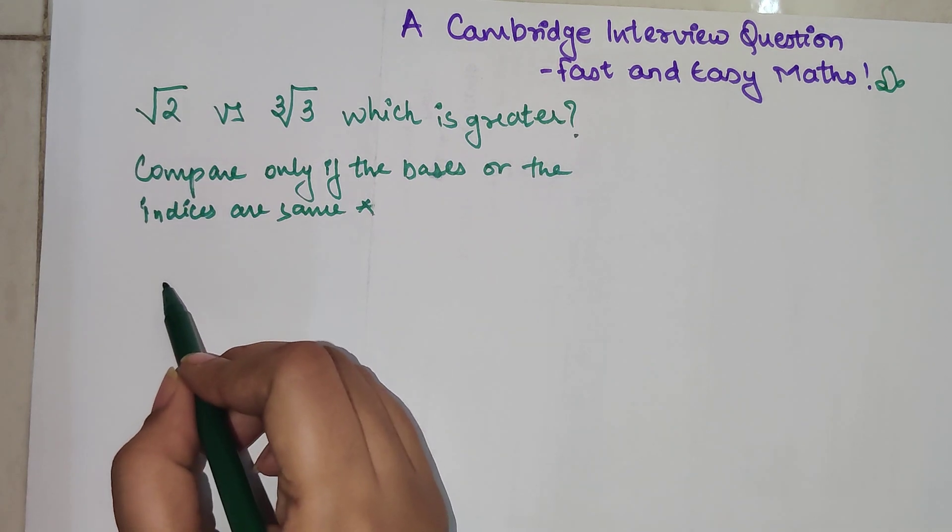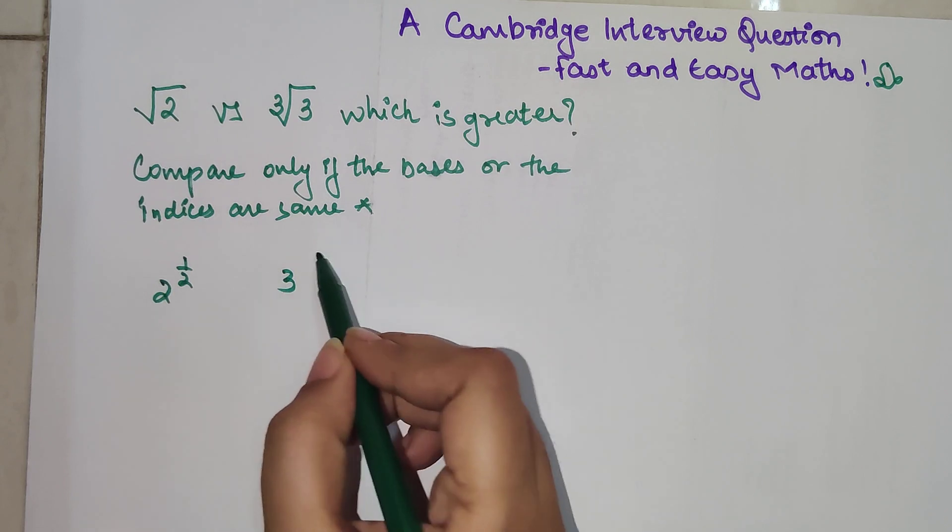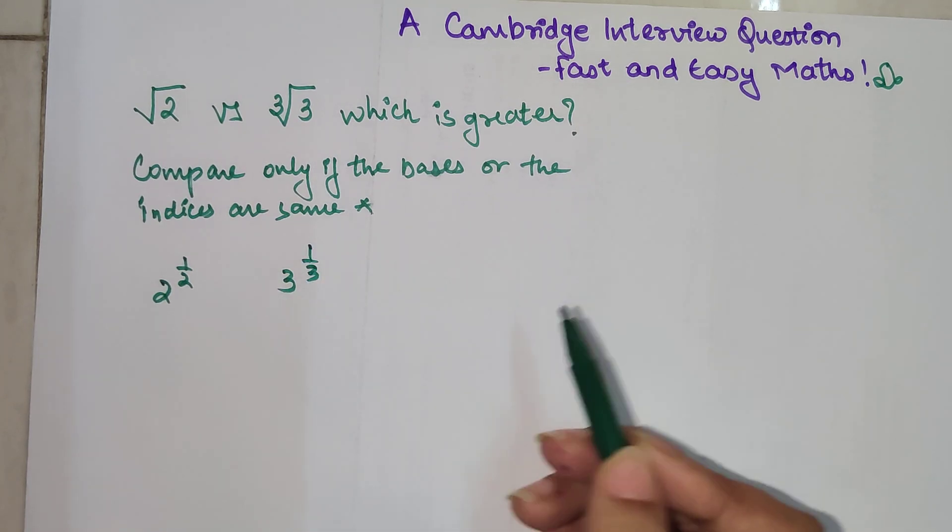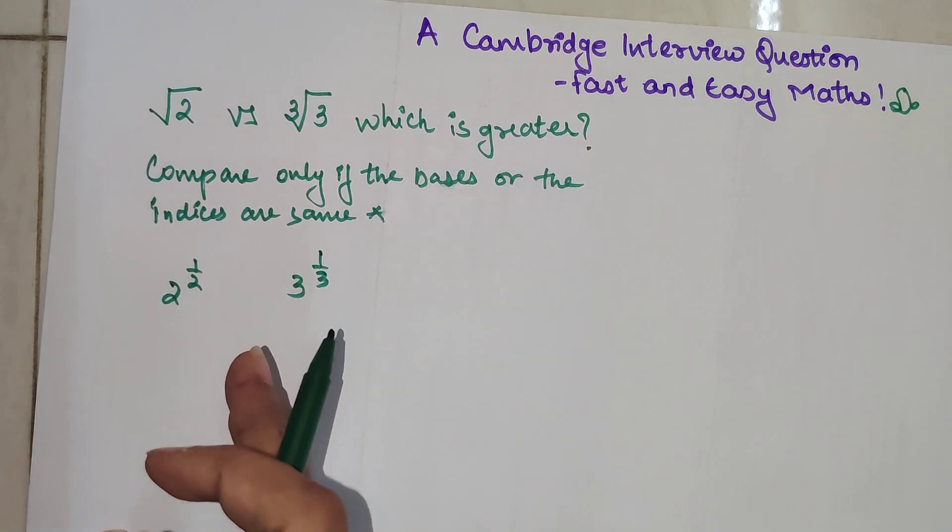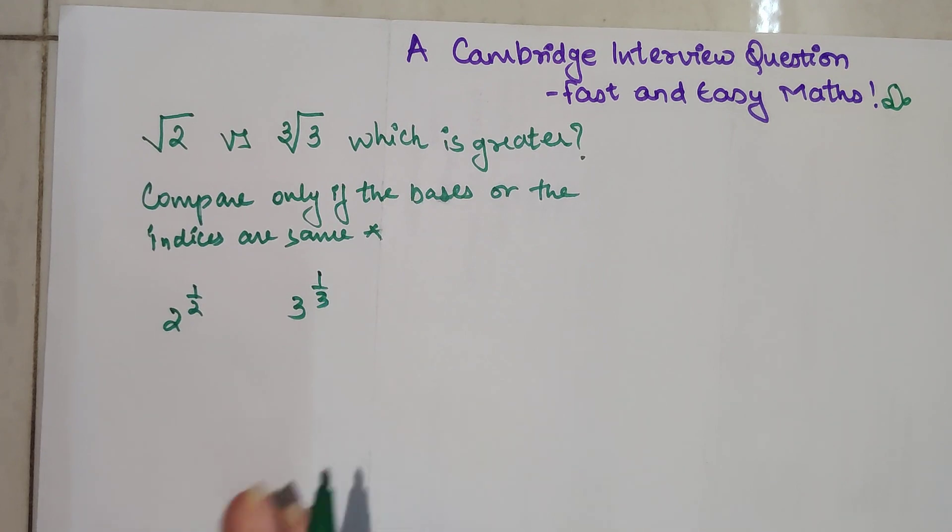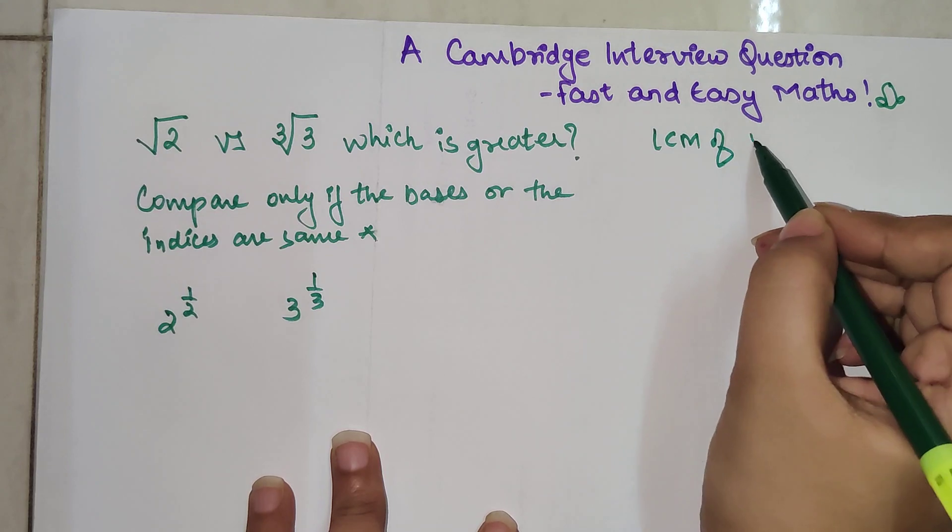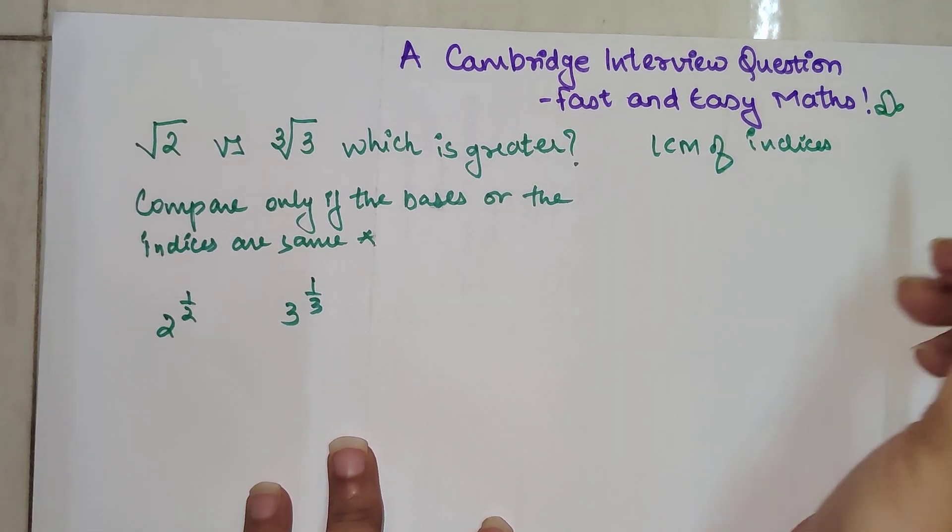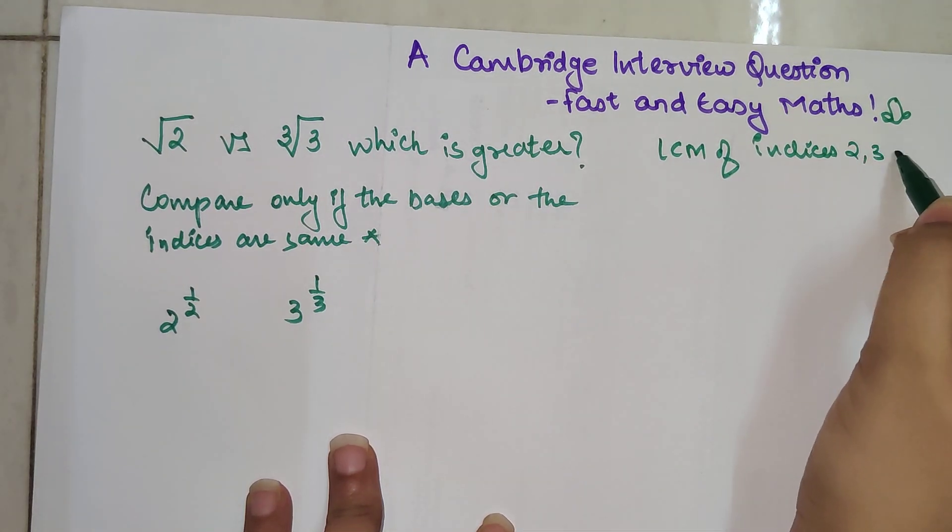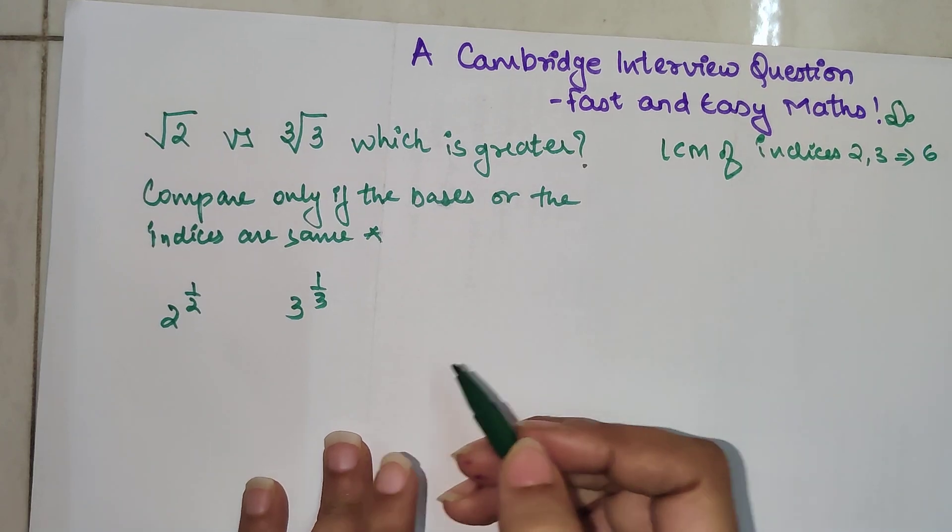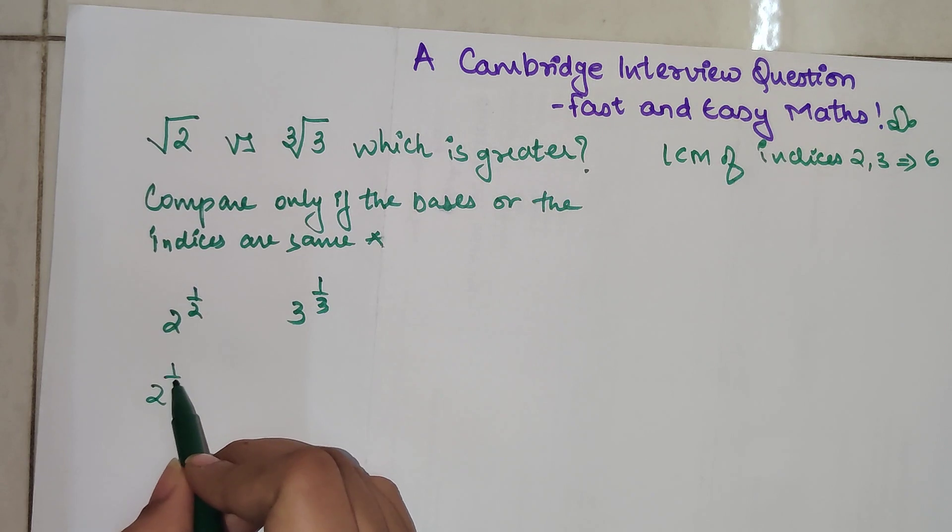Here we have 2 raised to half and here we have 3 raised to 1 by 3. When you are dealing with two numbers with completely different bases and different indices, what you should do is take the LCM of indices. So 2 and 3 will get you the LCM of indices as 6. Now try writing this in terms of 1 upon 6.